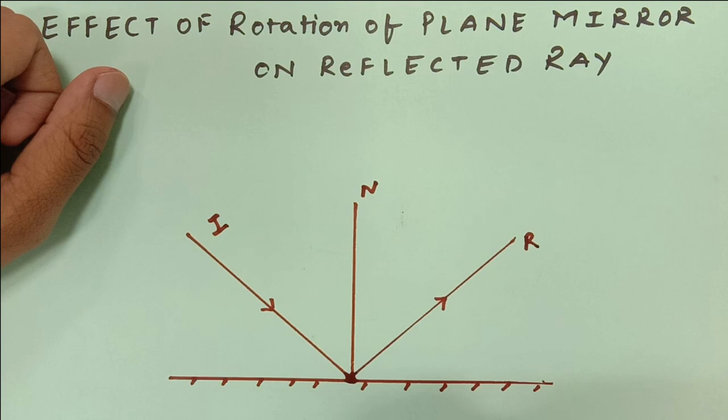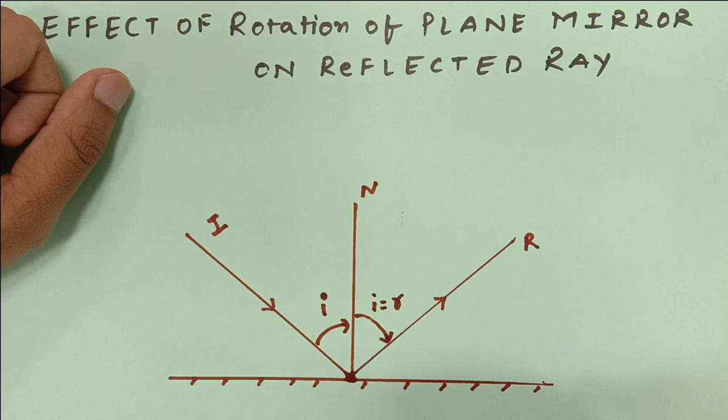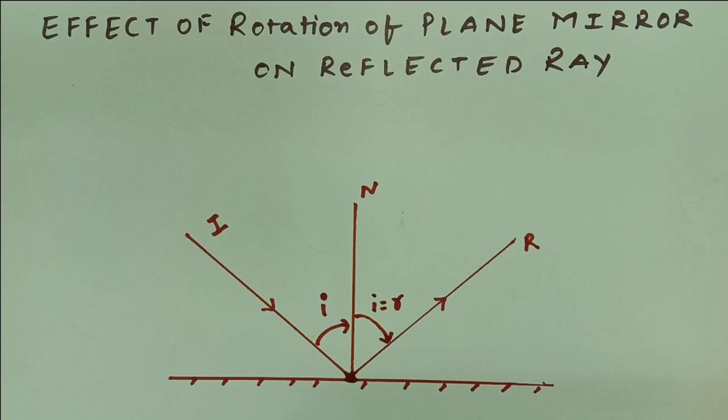This is the reflected ray. I know that this angle is I and this angle is R, but I and R are both equal as per the laws of reflection.